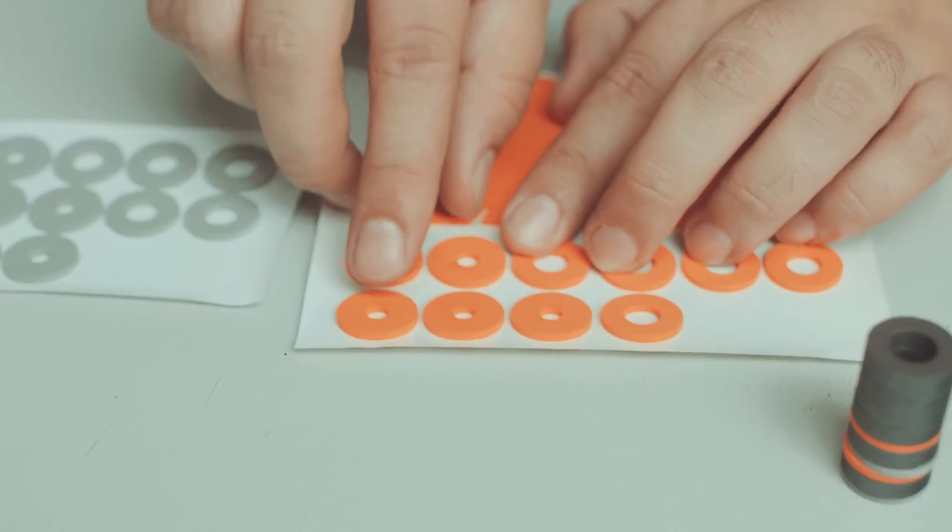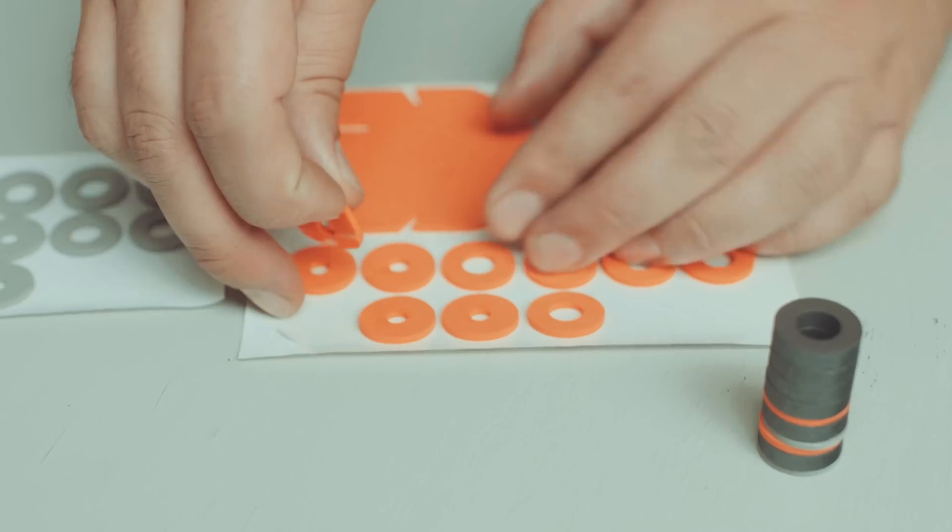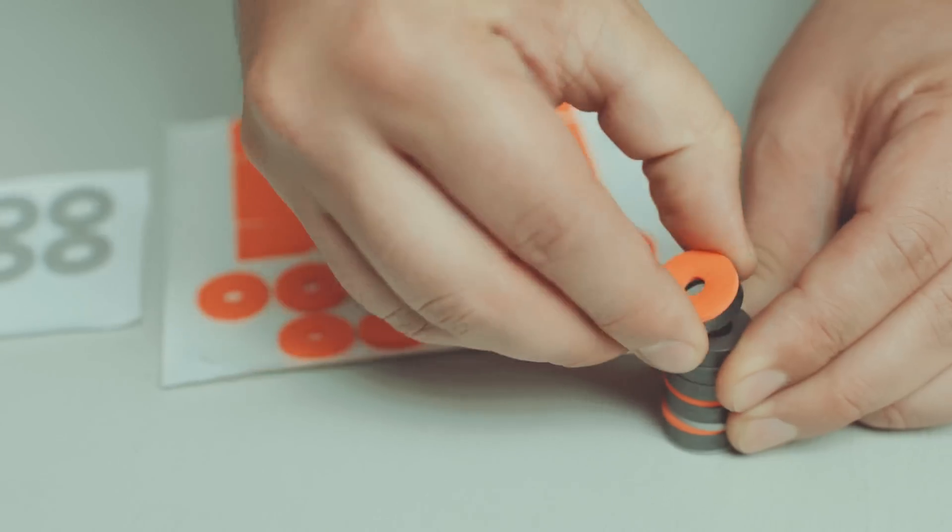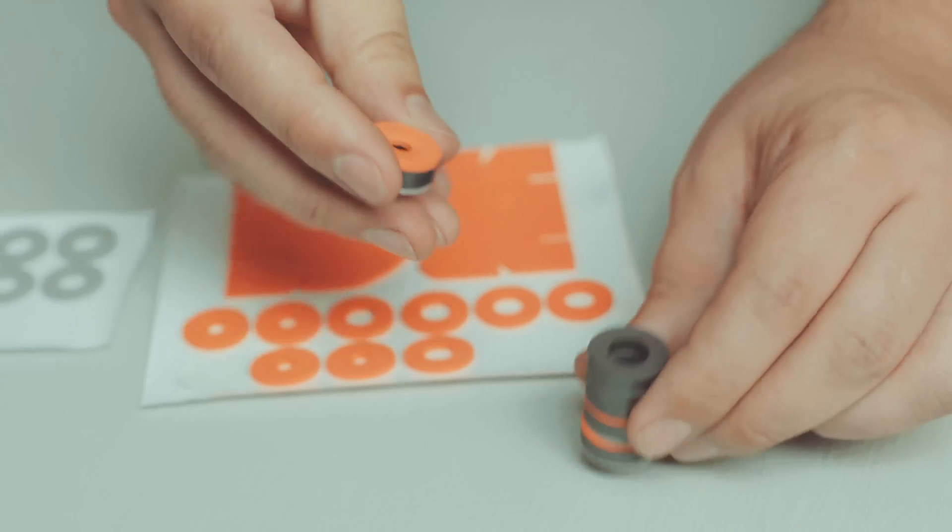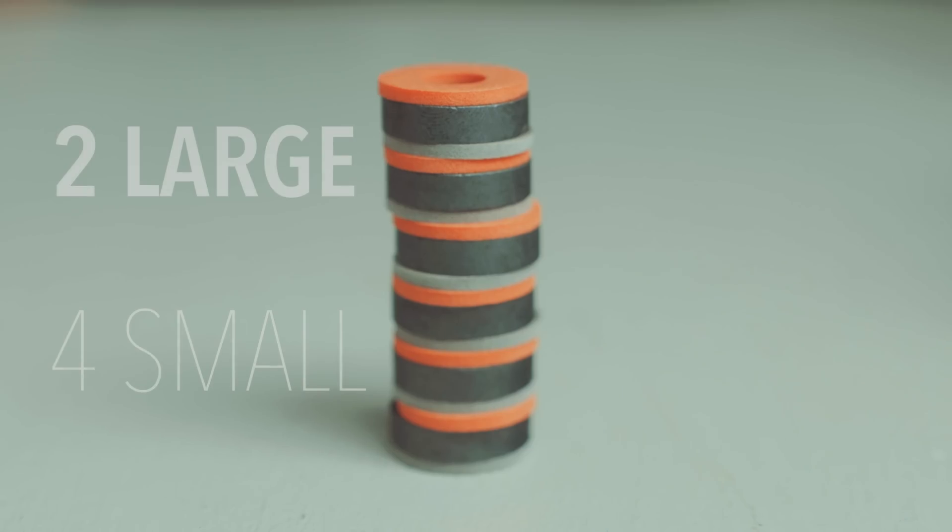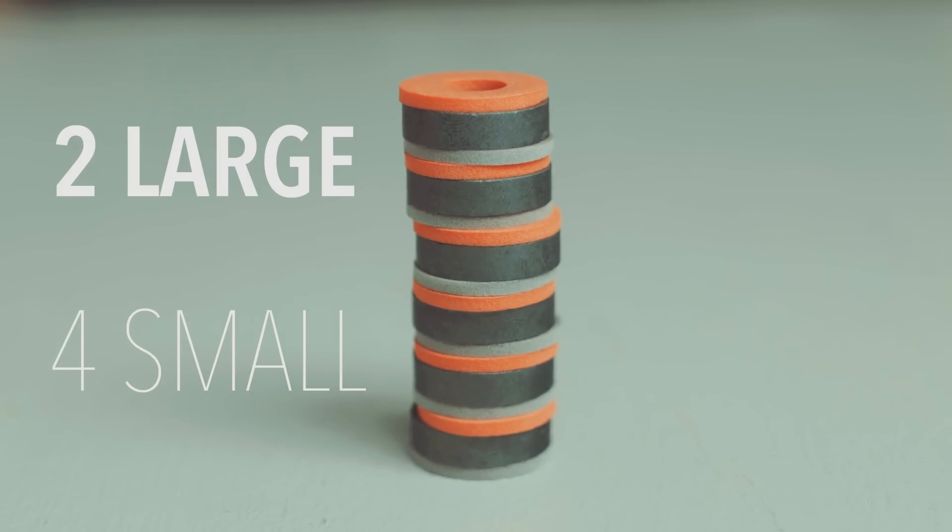Now we're going to do the same thing, but with small holed sticky foam. Stick an orange ring with a small hole to the top magnet and a gray ring on the bottom. Do this for the next three magnets. You should have four magnets with small holes and two magnets with large holes.